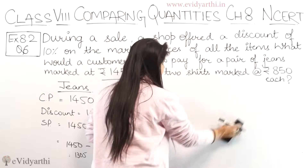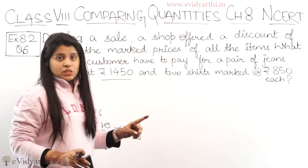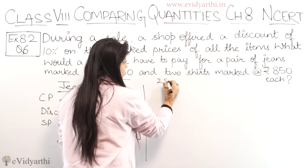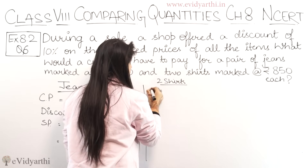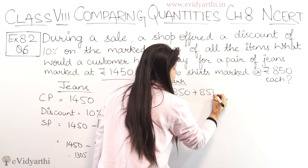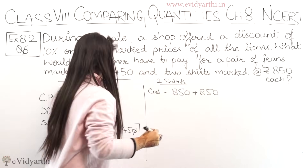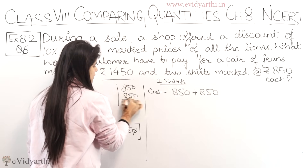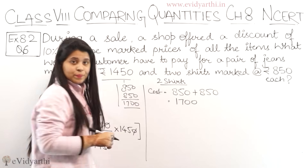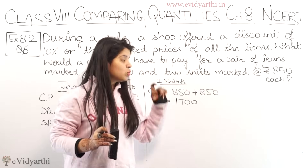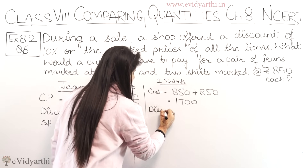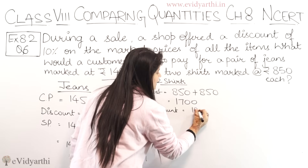Next, there are 2 shirts and the price of 1 shirt is given as 850. So the cost of 2 shirts is 850 plus 850. Now 850 plus 850 equals 1700. So the original price for 2 shirts is 1700. But after a 10% discount, the discount is again 10%.